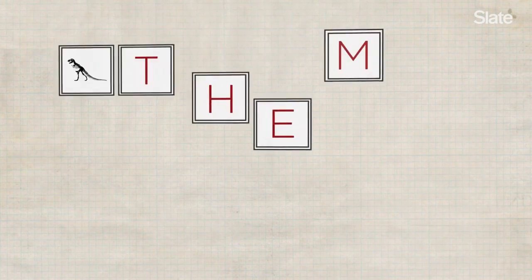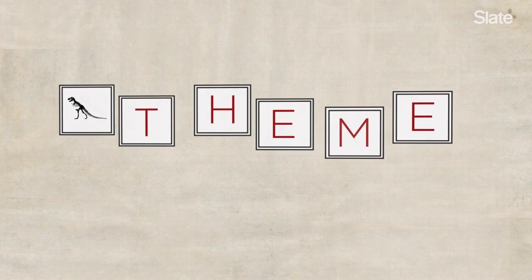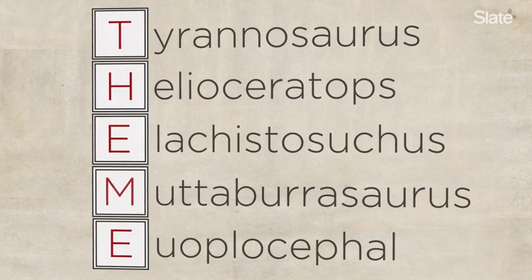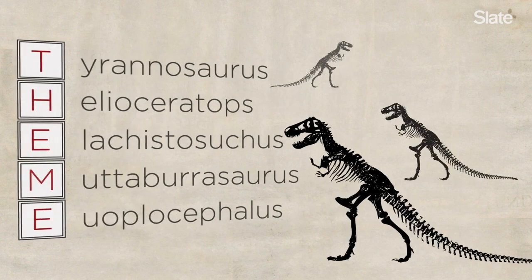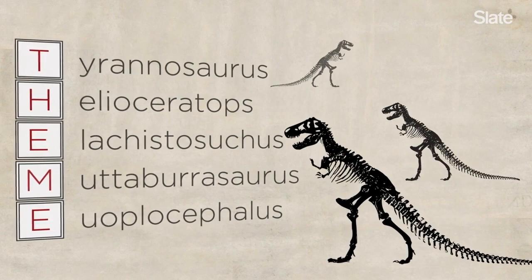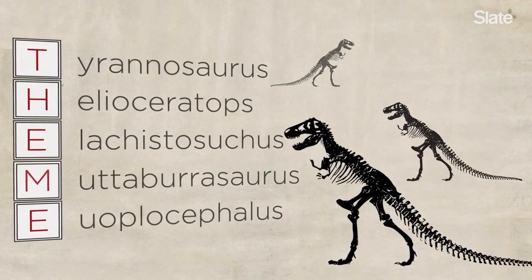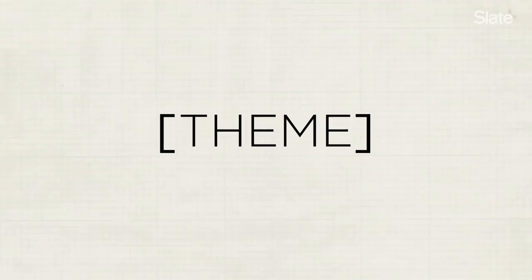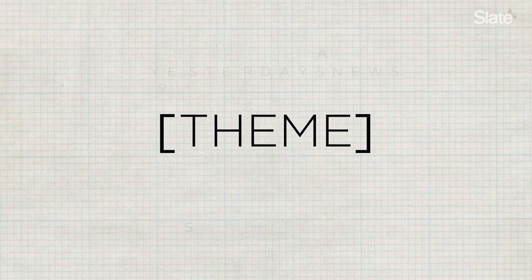Most crosswords have what's referred to as a theme — three or four or five answers, often the longest answers in the puzzle, that are somehow related. In general, if you want to make a crossword puzzle, that is where you begin. You have to come up with a theme.